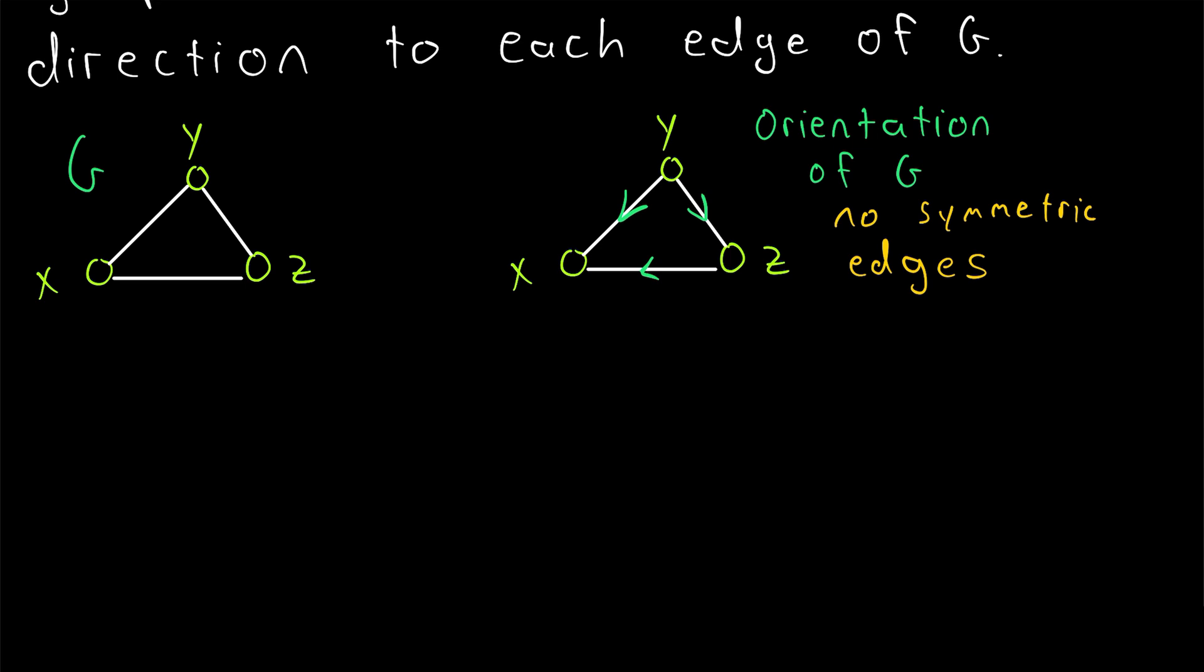And there's only one other thing I want to point out. Notice that our original graph G, it is of course connected. So we can start at any vertex and get to any other vertex. We could go from Y to X or Y to Z. We could go from Z to Y or Z to X and so on. But notice that is not true in our orientation of the graph.